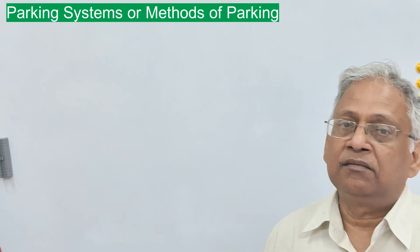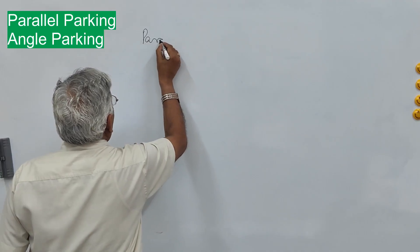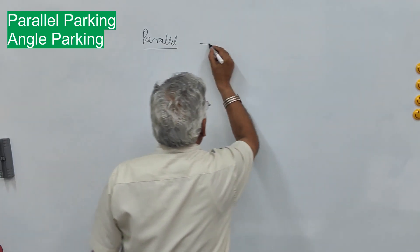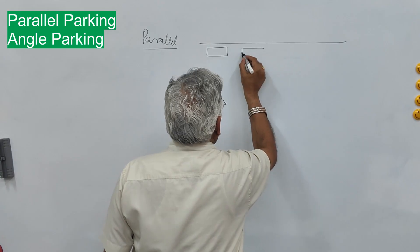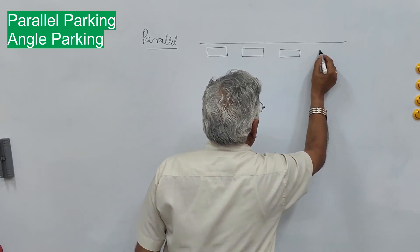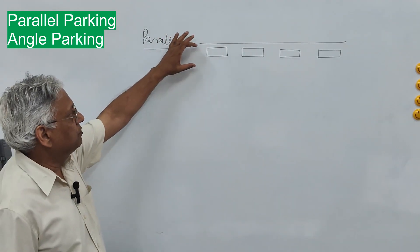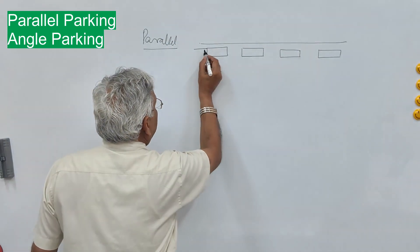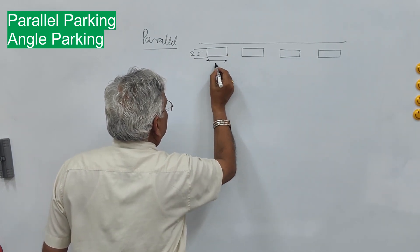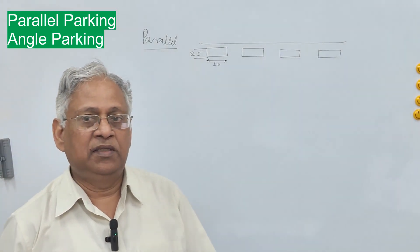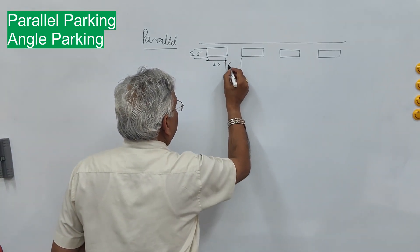Common types of on-street parking include parallel type parking, where we park the vehicle parallel to the movement of traffic along the curb line. The advantage of parallel parking is that it occupies minimum width — the slot is 2.5 meter wide and 5 meter long. The distance between two cars is 0.9 meter.